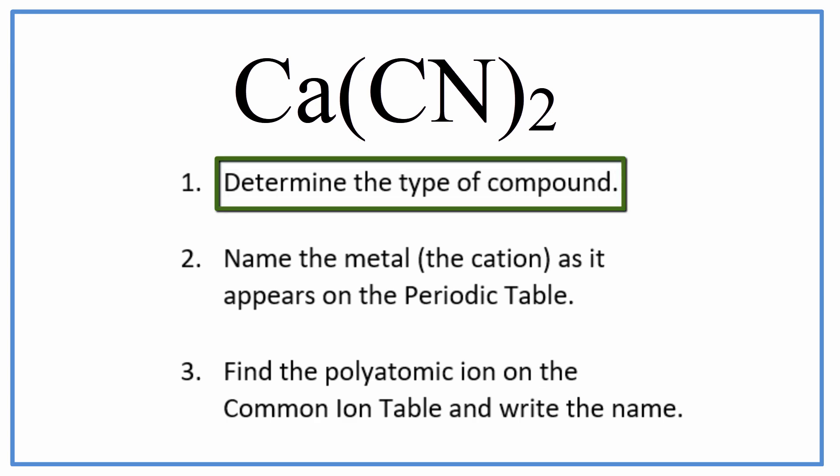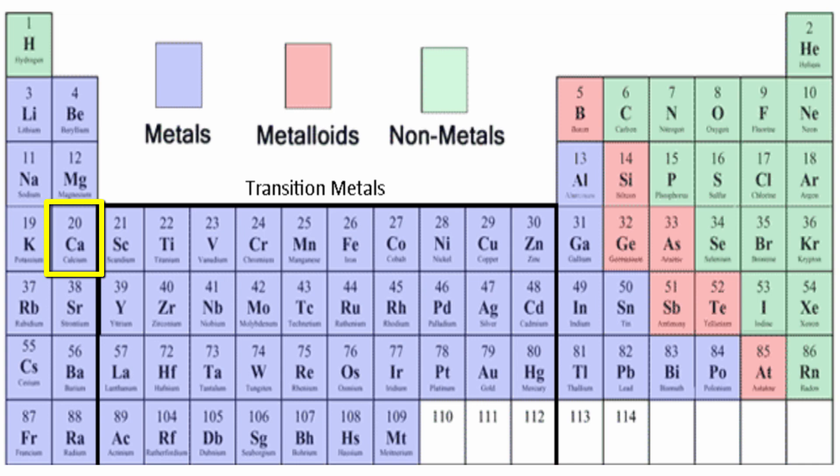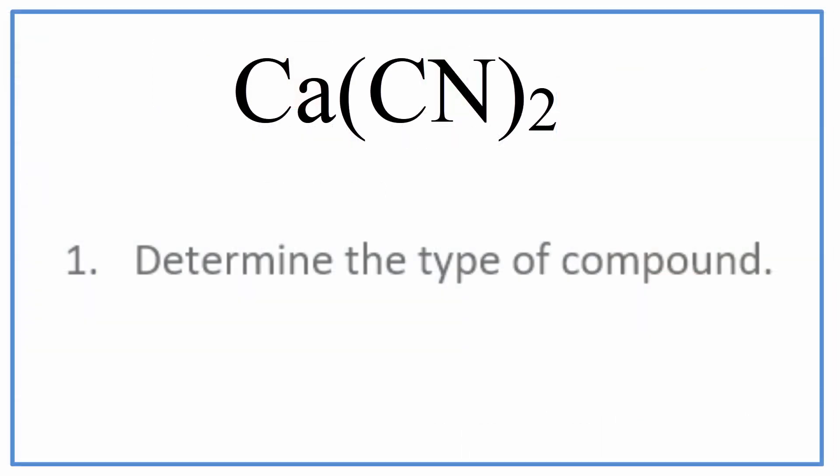First, we need to write the type of compound. On the periodic table, we can see that calcium is a metal, and then the CN, those are non-metals, and they form a polyatomic ion. That makes this a ternary ionic compound.